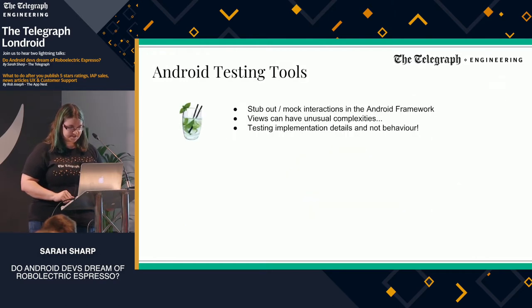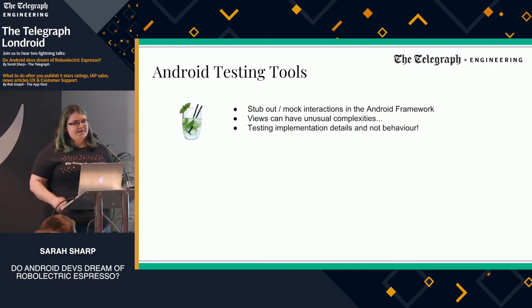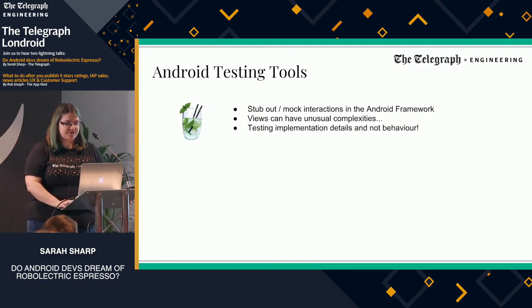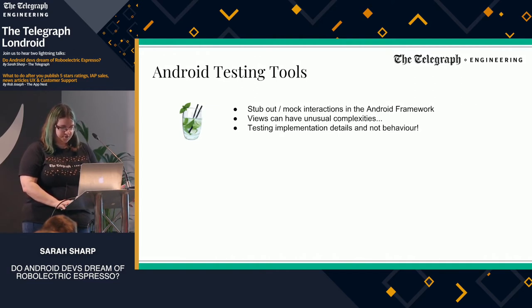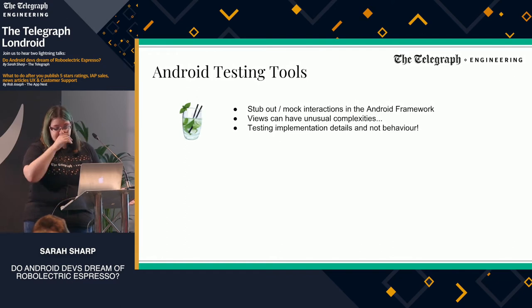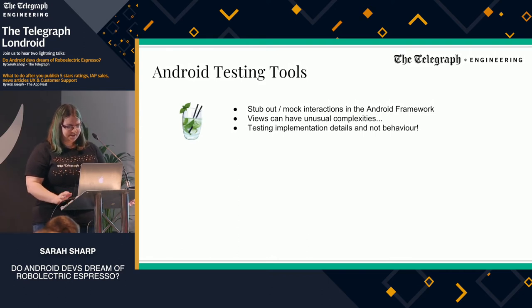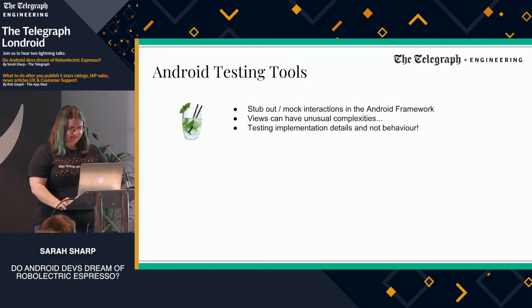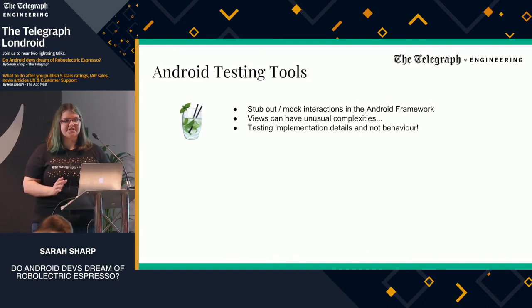Breaking those down a little bit — dealing with Android testing, we could use Mockito to stub out mock interactions in the Android framework. You might have used Mockito as a tool for unit testing, but it's not usually advisable for UI because views can have unusual complexities. You could be dealing with statefulness, changes in layout, various bits and pieces. By the time you've mocked out your input and output, you're not really testing anything — you're testing implementation details and not behavior.